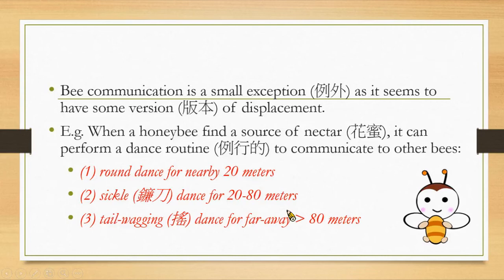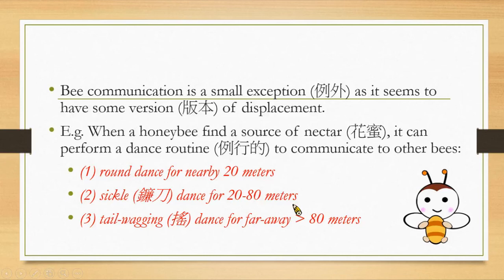Bees' communication is a small exception, as it seems to have some version of displacement. When a honeybee finds a source of nectar, it can perform a dance routine to communicate to other bees. There are three kinds of dances: the first is the round dance, done for nearby sources within 20 meters; the second is the sickle dance, done for between 20 to 80 meters; and the third is the tail-wagging dance, done for far-away places more than 80 meters.